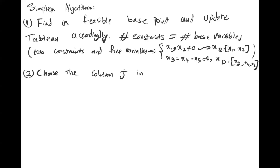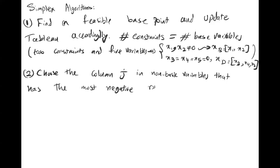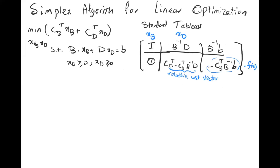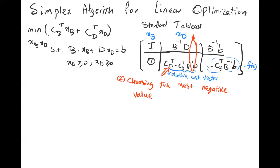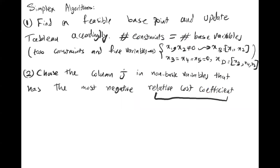In the next step we have to determine which non-basis column is going to enter the base and which base column is going to leave. We choose column j among the non-basis variables that has the most negative relative cost value. For example, if you have values -2, -3, and 5, you choose -3; if you have -1, -6, and -8, you choose -8. That most negative value tells you which column enters the basis.